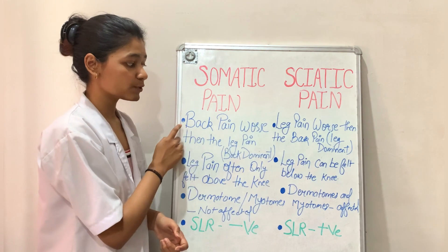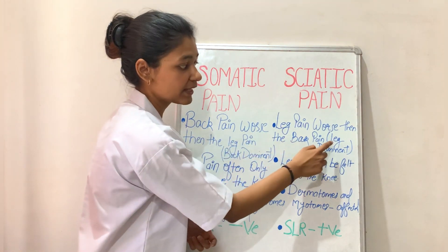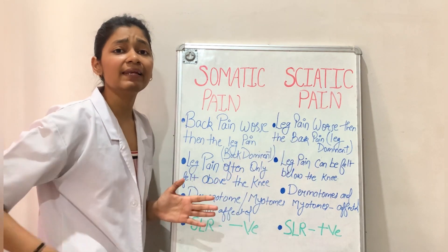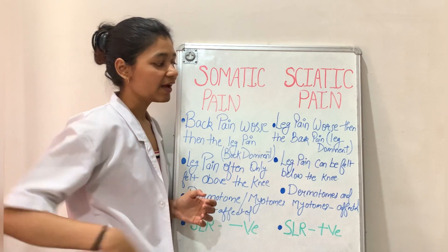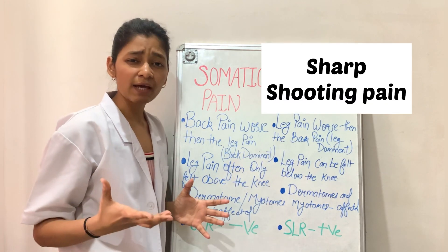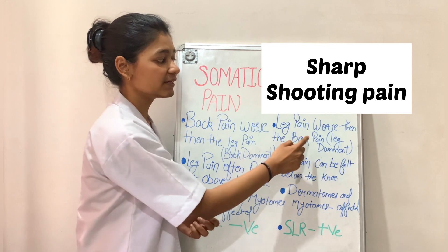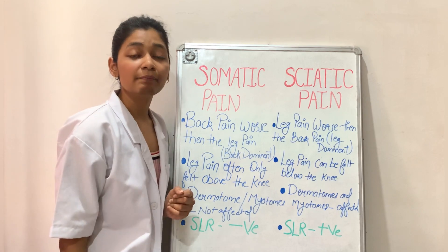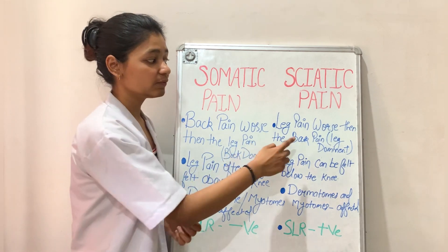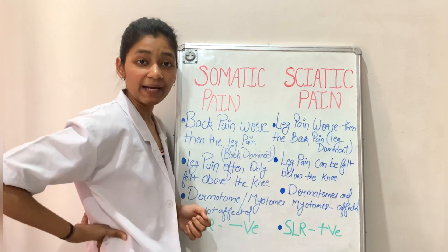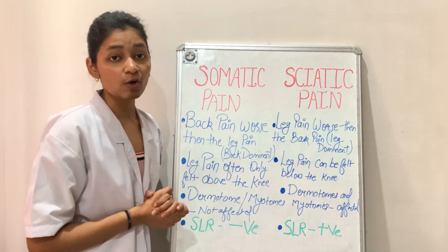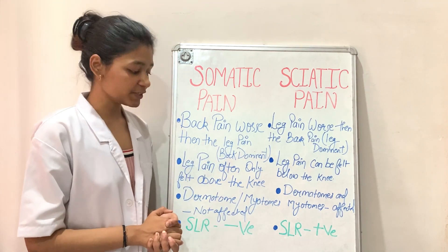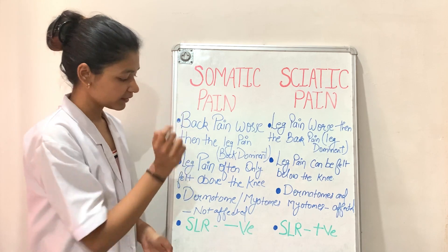On the other hand, a patient with sciatic pain will have leg pain more severe than the back pain — completely opposite of somatic pain. These patients are considered leg-dominant; they will say that the leg pain is more severe. The leg pain will be sharp and shooting because in sciatic pain there is nerve involvement, making the leg pain sharp and shooting and more severe than the back pain. In somatic pain there is no nerve involvement, so the leg pain is dull and achy.